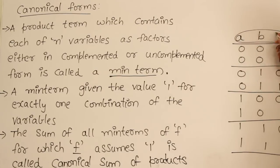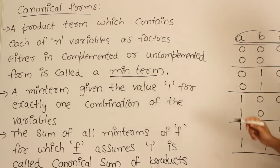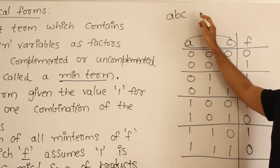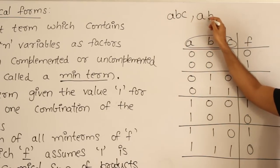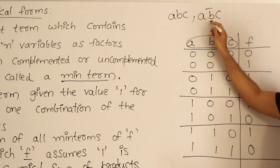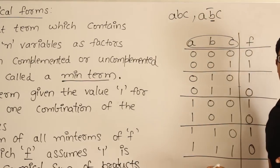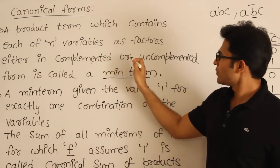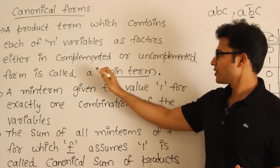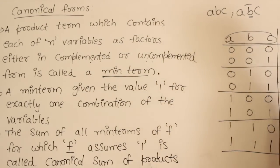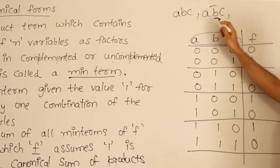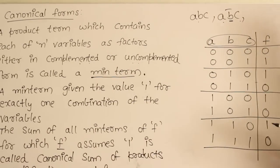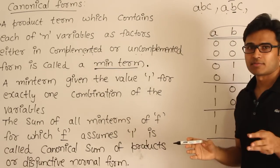For example, if the function is made of three variables A, B, C, then the minterm should contain all three — like A·B·C, or A·B'·C. A variable can occur either in its complemented or uncomplemented form. Any term made of all three variables is a minterm.